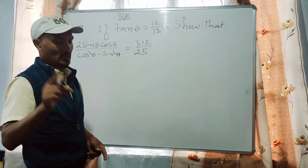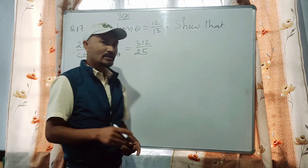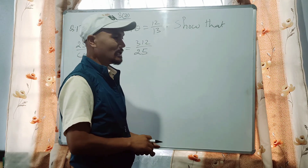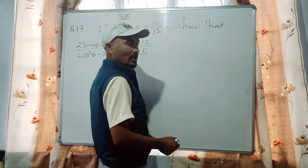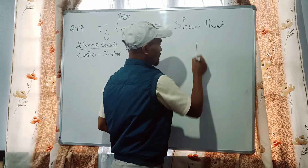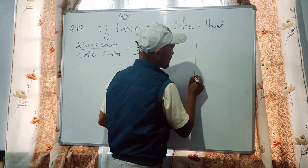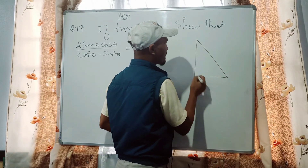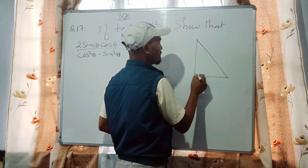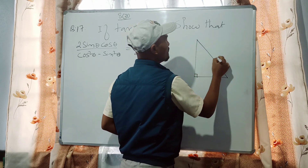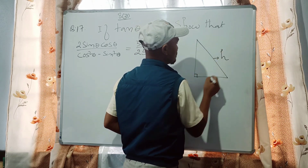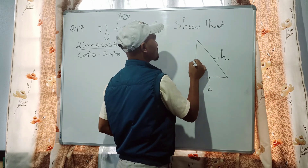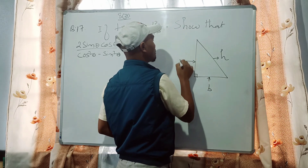If you are given a right angle, you draw the right angle triangle. You identify the hypotenuse, the base, and the perpendicular.